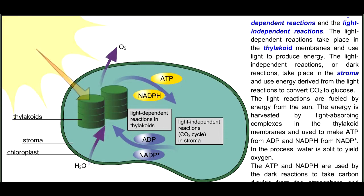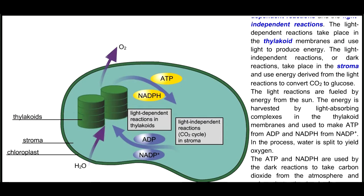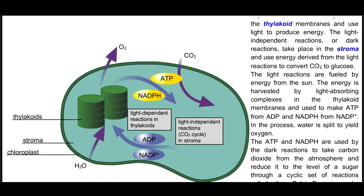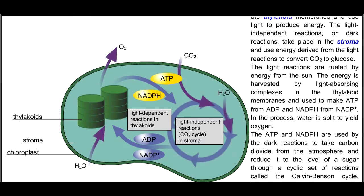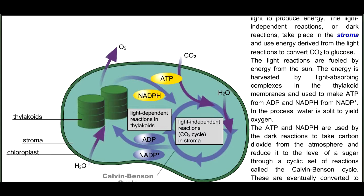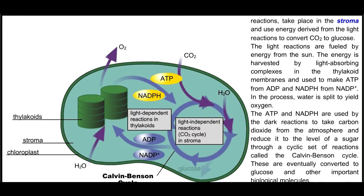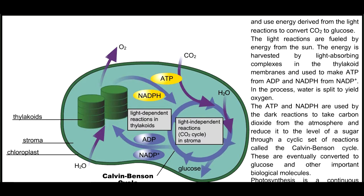The ATP and NADPH are used by the dark reactions to take carbon dioxide from the atmosphere and reduce it to the level of a sugar through a cyclic set of reactions called the Calvin-Benson cycle. These are eventually converted to glucose and other important biological molecules.